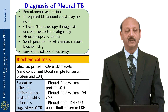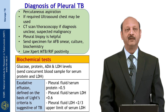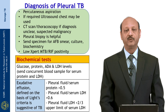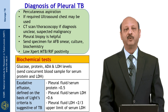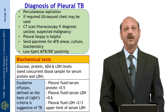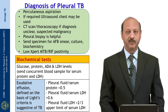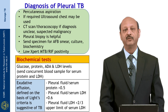Light's criteria have been defined: if any one of the three is met — pleural fluid to serum protein ratio more than 0.5, pleural fluid to serum LDH ratio more than 0.6, or pleural fluid LDH more than two-thirds of the upper limit of normal for blood LDH — they all indicate exudative effusion, which goes in favor of tuberculosis.